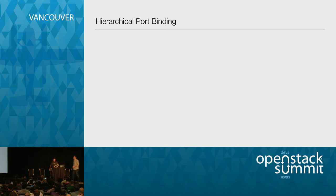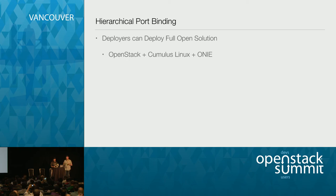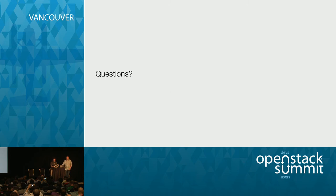To summarize: hierarchical port binding is available today and you can deploy a fully open solution without waiting for proprietary options. The open solution demonstrated here is OpenStack, Cumulus Linux, Seconda, and an OpenFlow-enabled switch. It works at scale, allows you to maximize hardware capacity, and makes the most of your investments. Thank you for your time. Any questions?